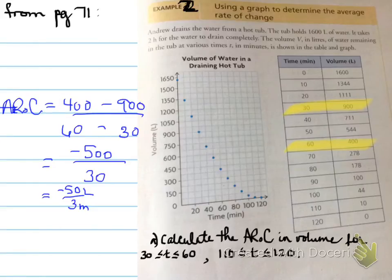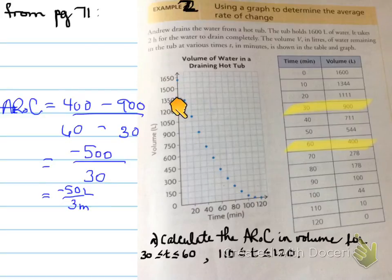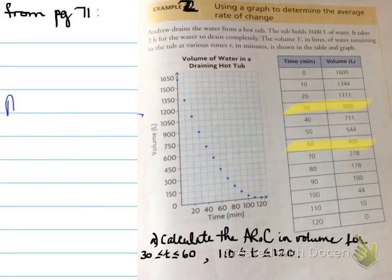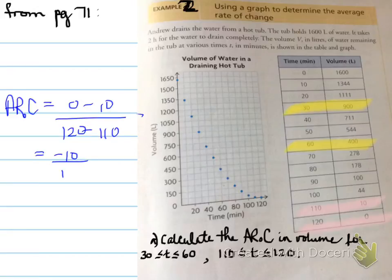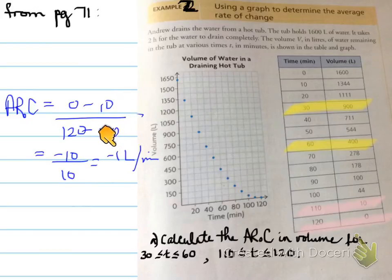Let's look at the next interval, 110 to 120. Will it be the same? Hopefully you're saying it won't be the same, because this doesn't represent a straight line. The average rate of change for the interval from 110 to 120 is negative 10 over 10, meaning it's dropping 1 liter for every minute.